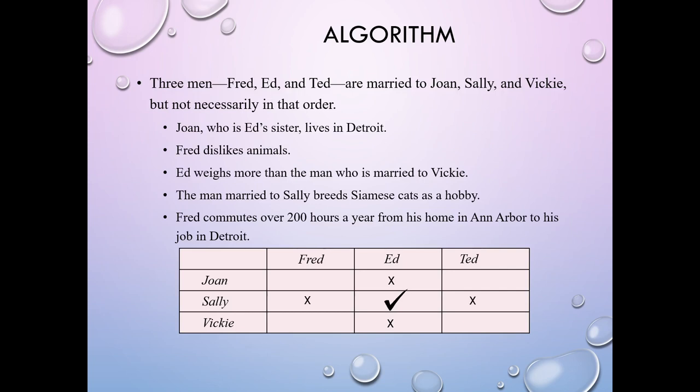Once we know Ed is married to Sally, we can cross Sally off for the other two men. Now, Joan and Fred can't be married because Joan lives in Detroit and Fred commutes from his home in Ann Arbor — so Joan must be married to Ted. That means we can cross Ted off for Vicky, and we're left with Fred must be married to Vicky. Very quickly you can go through the clues and figure out who must be married to whom.